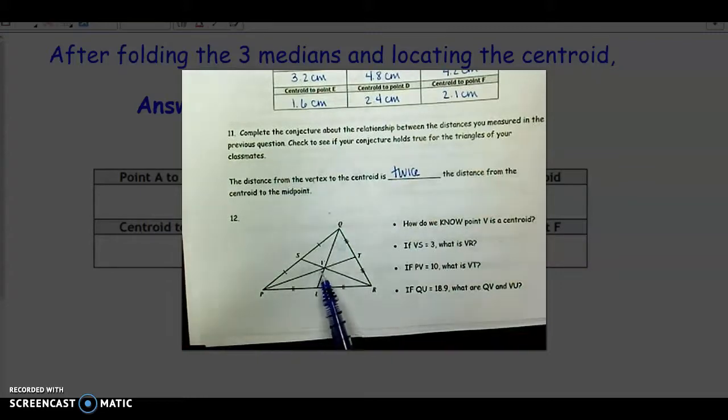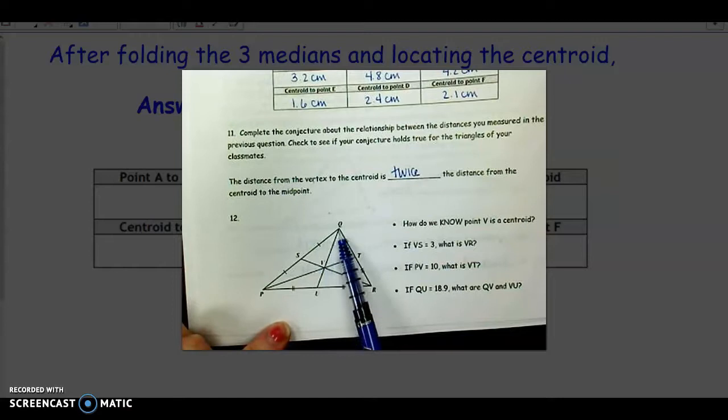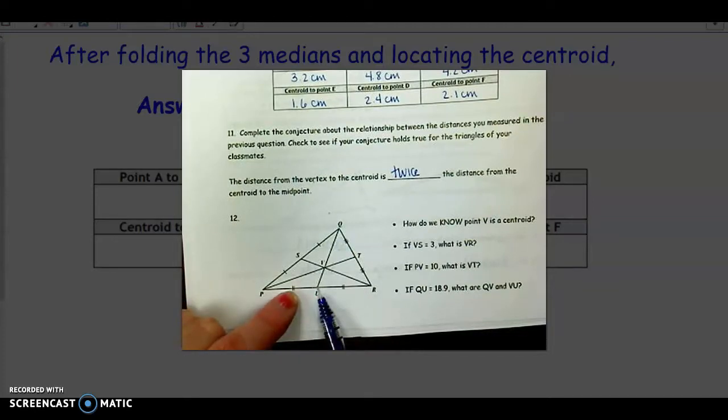Now, how do we know point V is a centroid? Notice each one of these segments starts at a vertex, goes to a point where we have these tick marks on each side.